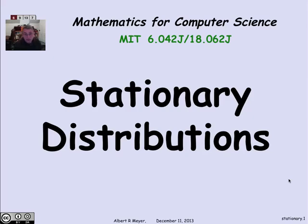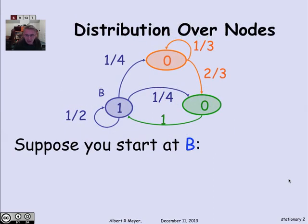Some of the standard questions we've examined already about random graphs are the probability of getting from one place to another, or the expected time to get from one place to another. But a different kind of question that comes up in a fundamental way is the probability of being someplace. Here is the graph with states blue, orange, and green that we've seen before. Suppose that I start at state B, and I ask: what's the probability of being at each of these states after one step?